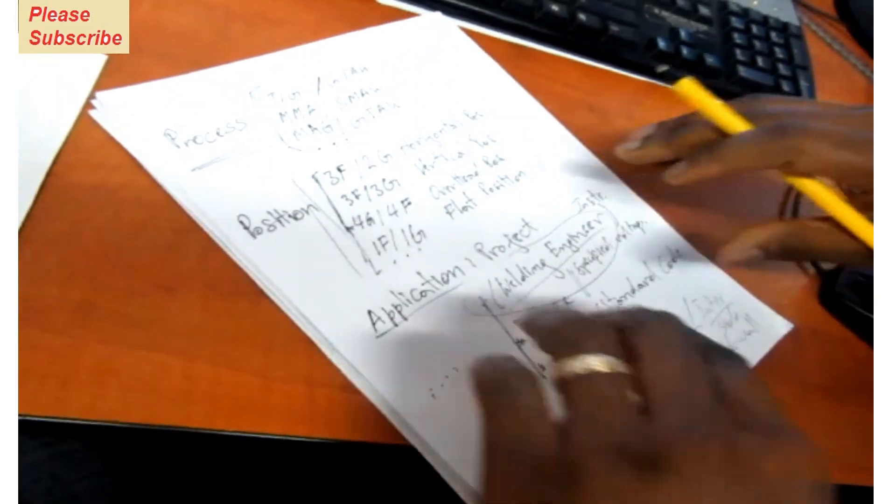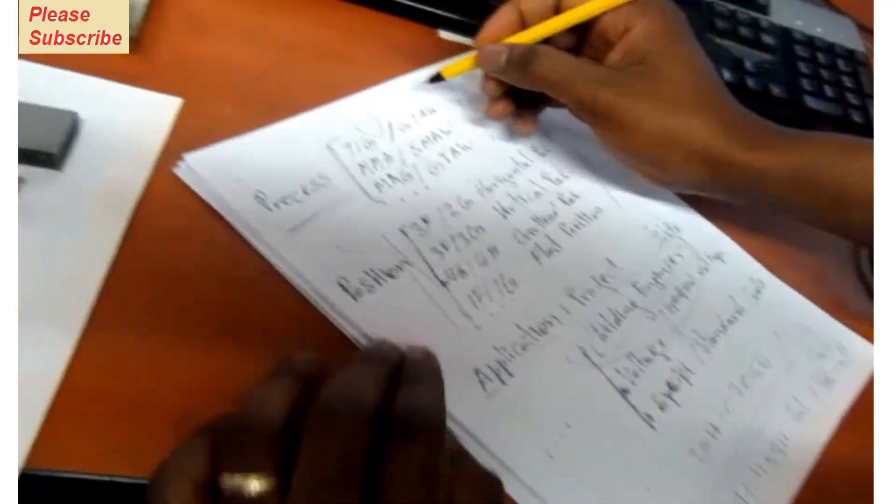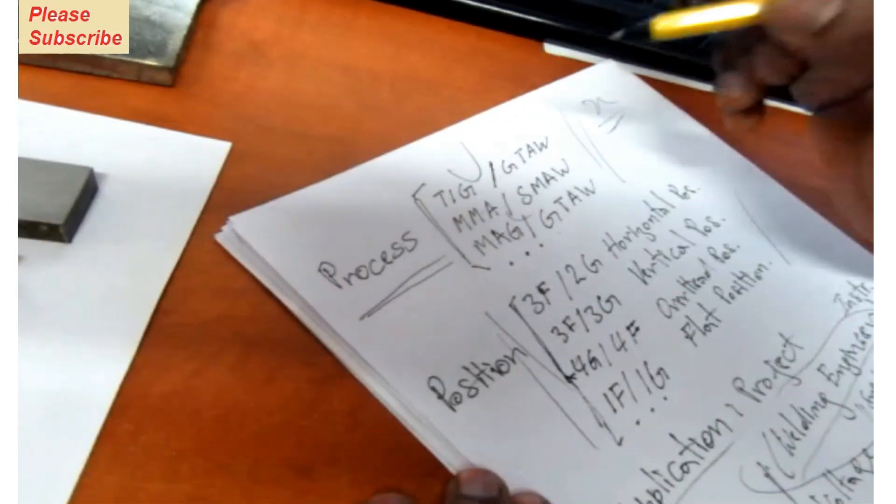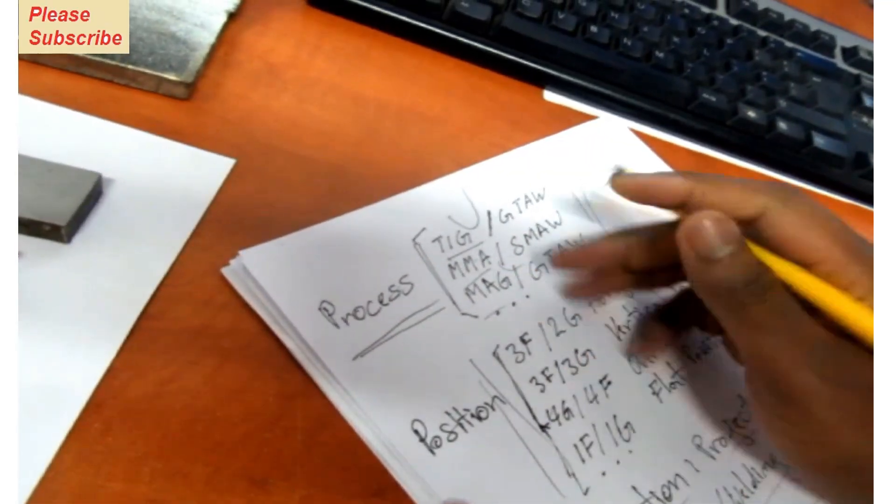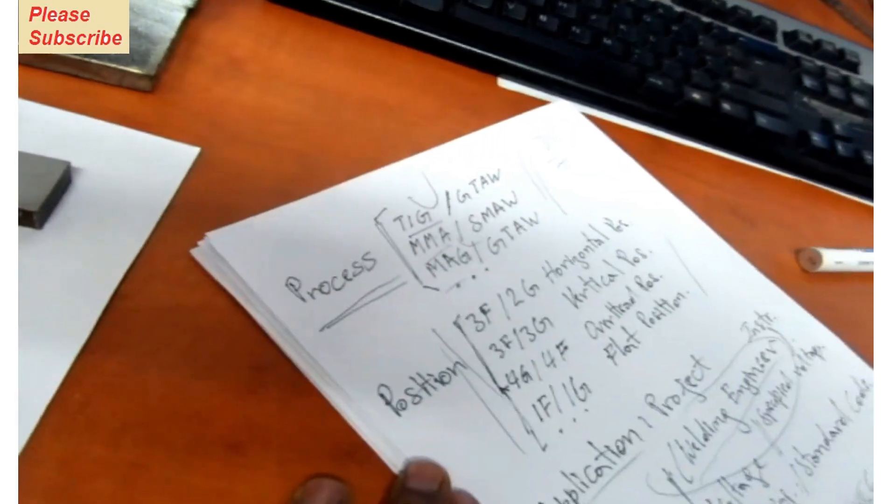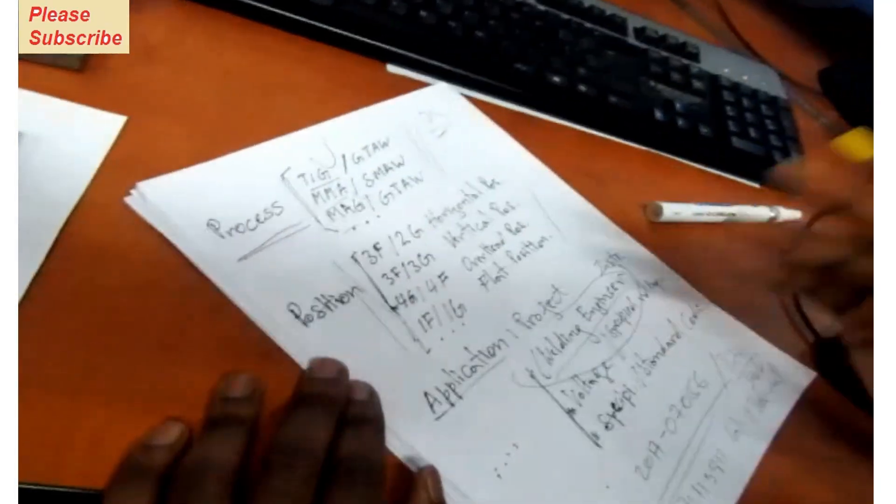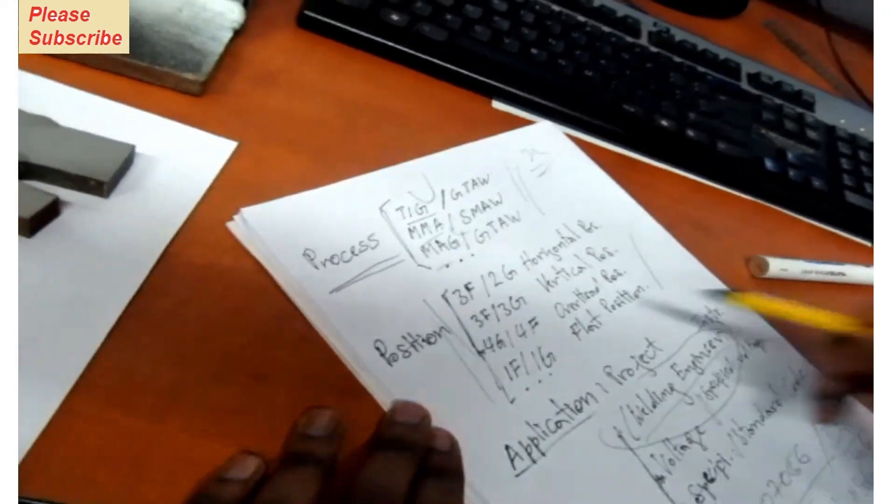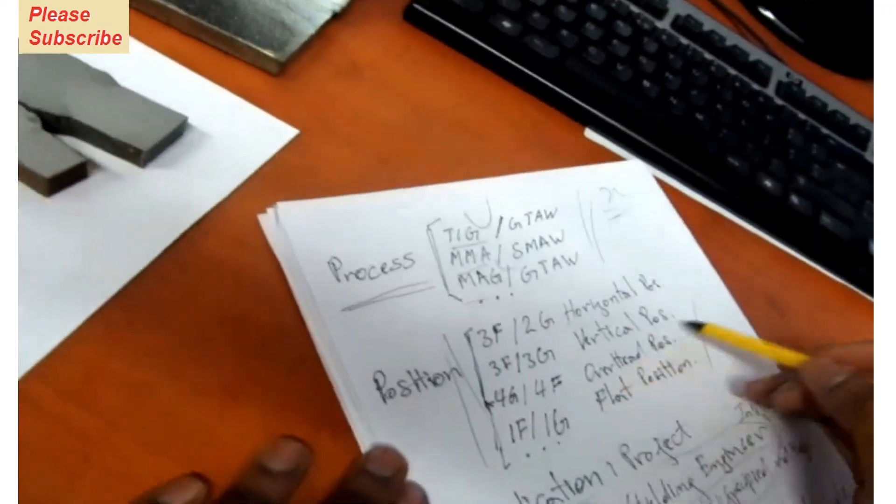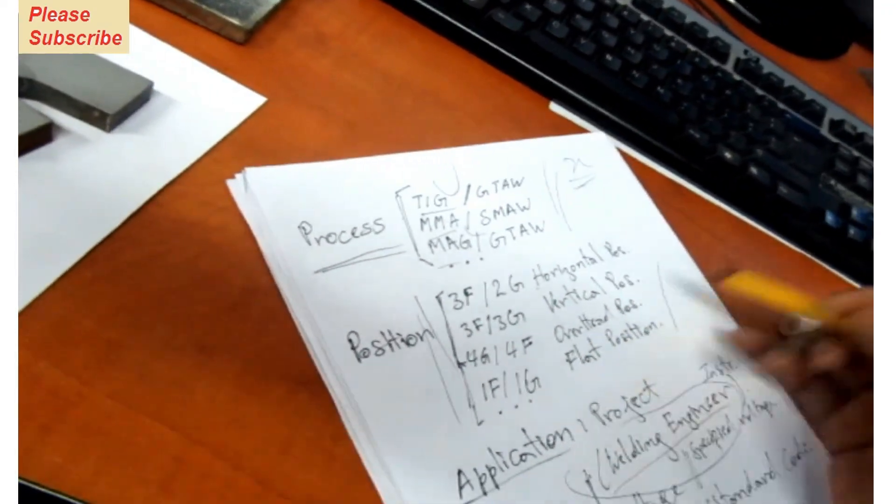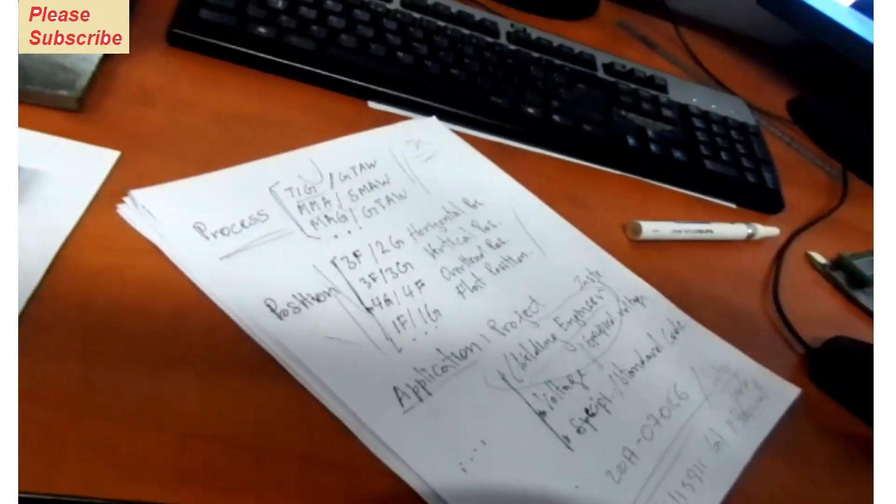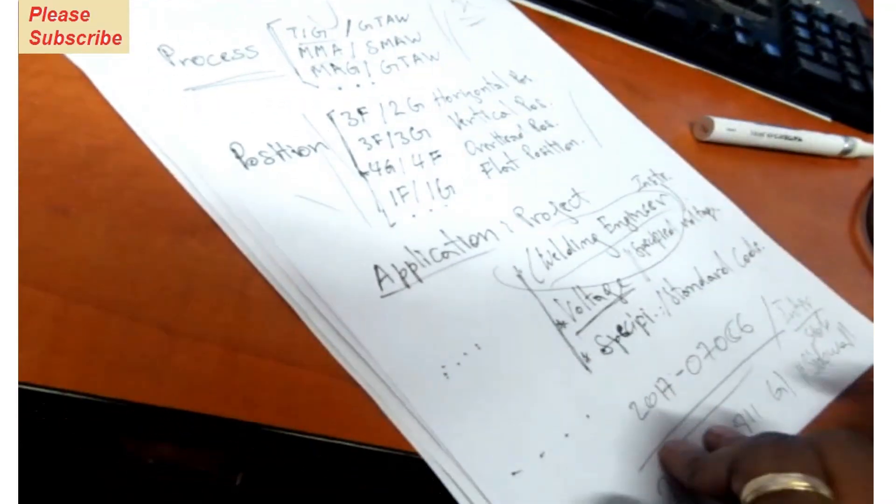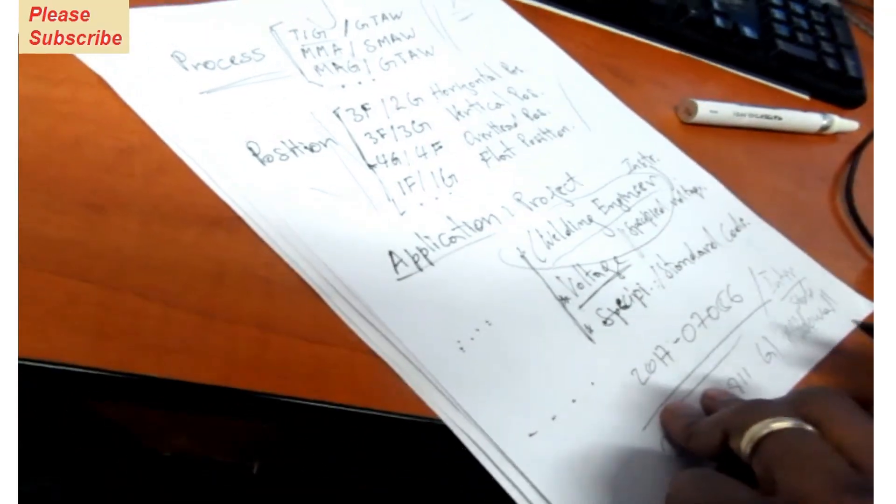According to the project - whether it's a bridge construction, train construction, whatever it might be - the welding engineer specifies a certain process to be used. It might be TIG, MMA, MAG, and so on. Then he wants a certain position - horizontal, vertical, overhead, or flat position. Then he wants the welder to use a certain voltage for that project.